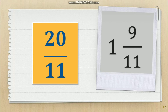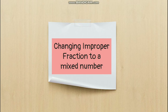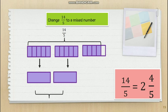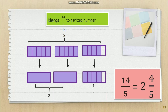Now let's learn how to change an improper fraction to a mixed number. To understand better, let us start from an illustration. Change 14/5 to a mixed number. In the illustration, 14/5 is shown. Since we have to make it a mixed number, and a mixed number has a whole part, we have one whole, two wholes, and then copy the fraction — 4/5. So 14/5 is equal to 2 and 4/5.